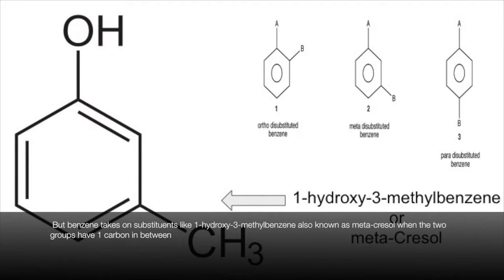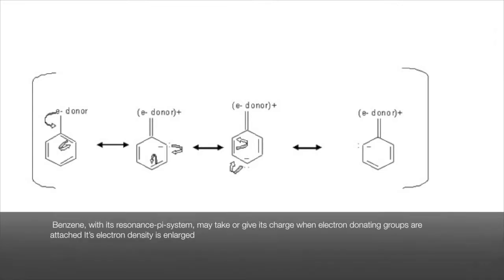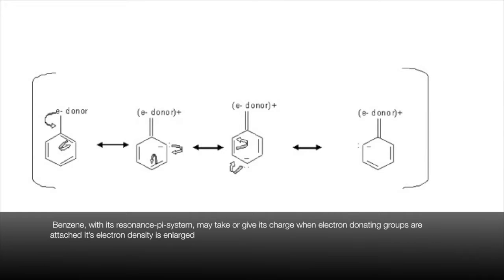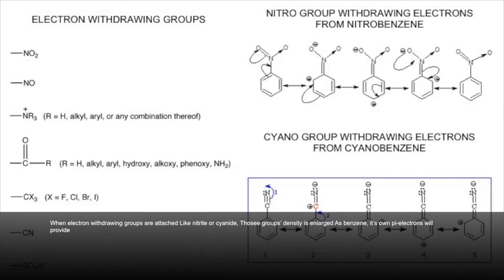But benzene takes on substituents like 1-hydroxy-3-methylbenzene, also known as metacresol when the two groups have one carbon in between. Benzene with its resonance pi system may take or give its charge. When electron-donating groups are attached, the electron density is enlarged. When electron-withdrawing groups are attached, like nitrite or cyanide.